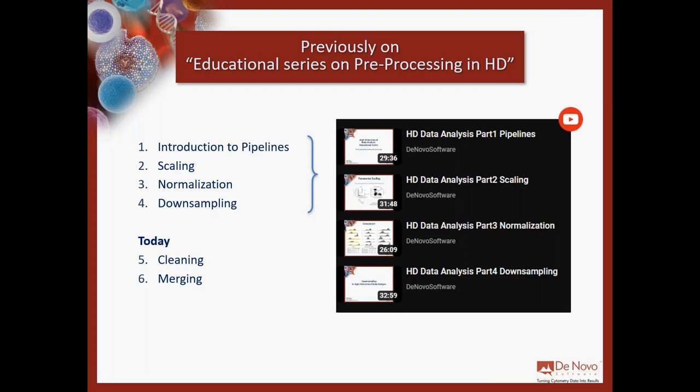Pre-processing is what we do to prepare the data before running the cool algorithms. The cool algorithms can be like UMAP, TSNE, FlowSOM, Phenograph, and so on. Those are all steps that prepare the data to be analyzed by either clustering or dimensionality reduction. Scaling is really, really important, so feel free to go back and watch that video like three times.